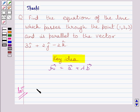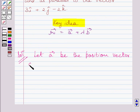Let a vector be the position vector of the given point (1, 2, 3). We can write a vector equals i plus 2j plus 3k.